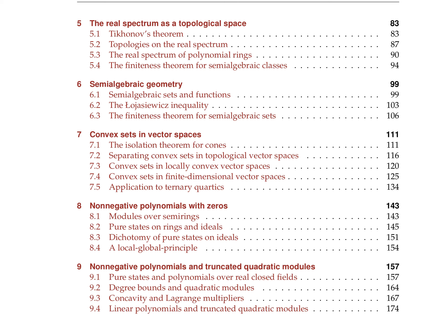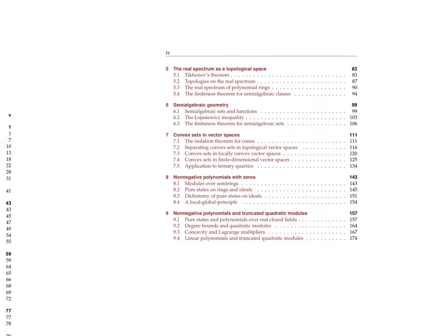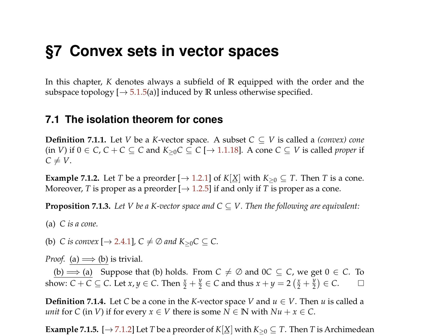You might have heard about parts of this in a lecture on convexity, on topological vector spaces, or in lectures about functional analysis. Only in the last section of this chapter do we come back to our main topics, but we need quite a long way to have tools available which we will need later. It is more or less an easy subject because we leave real algebraic geometry for a while, but it is very important.